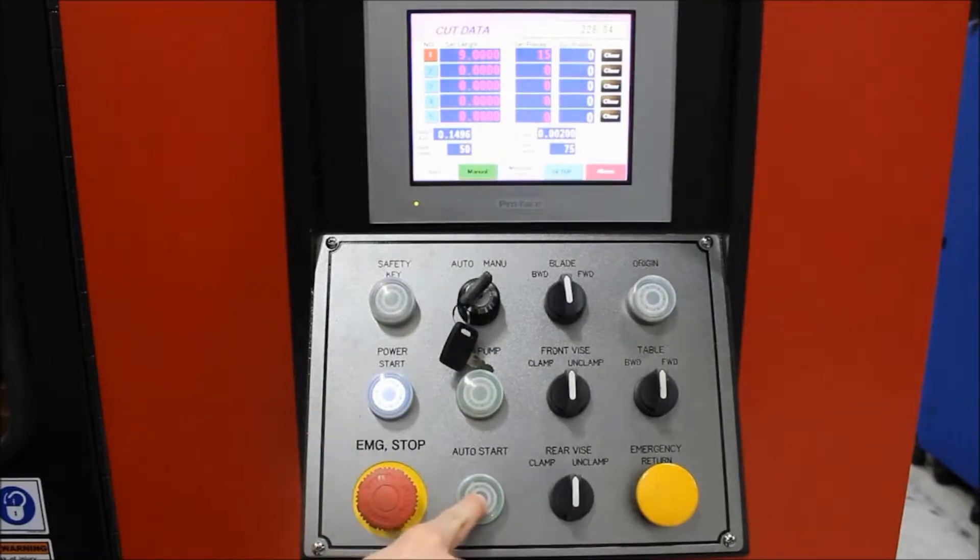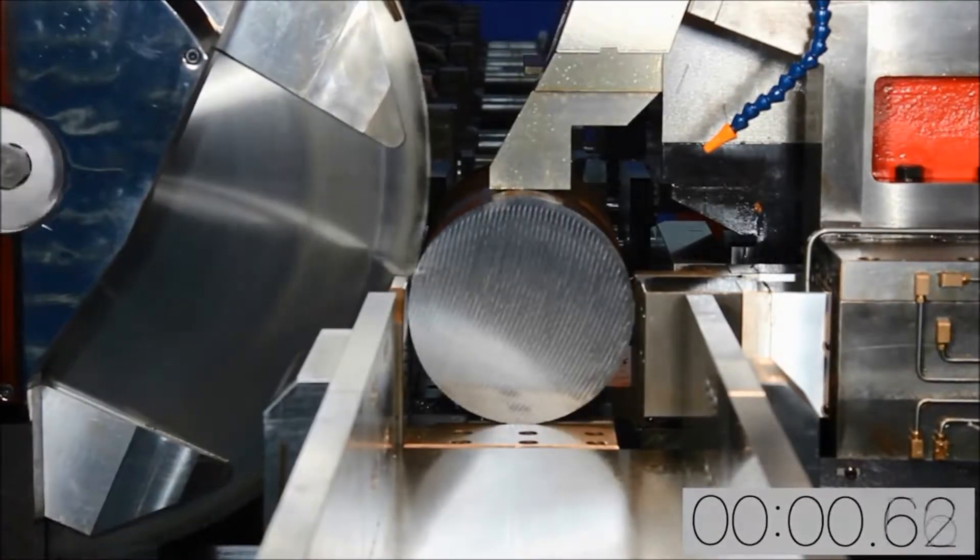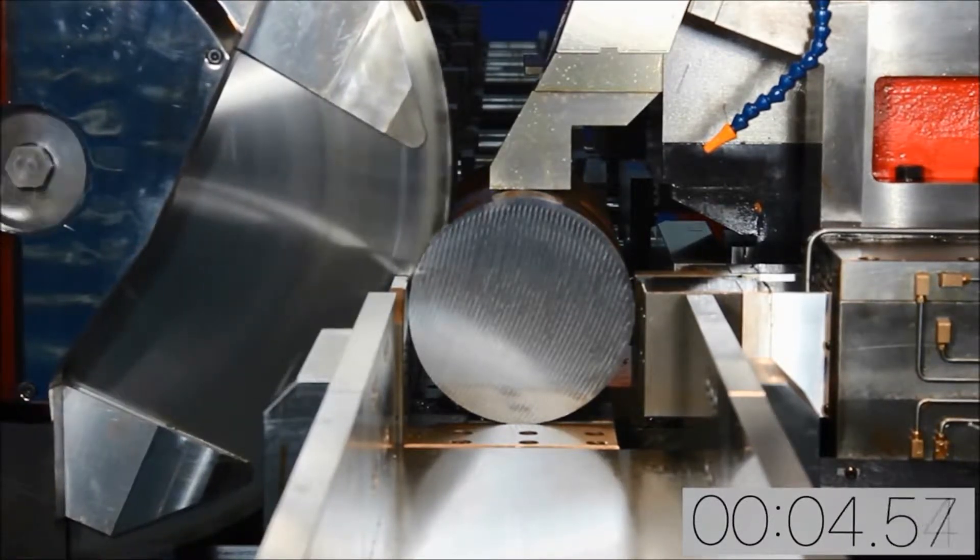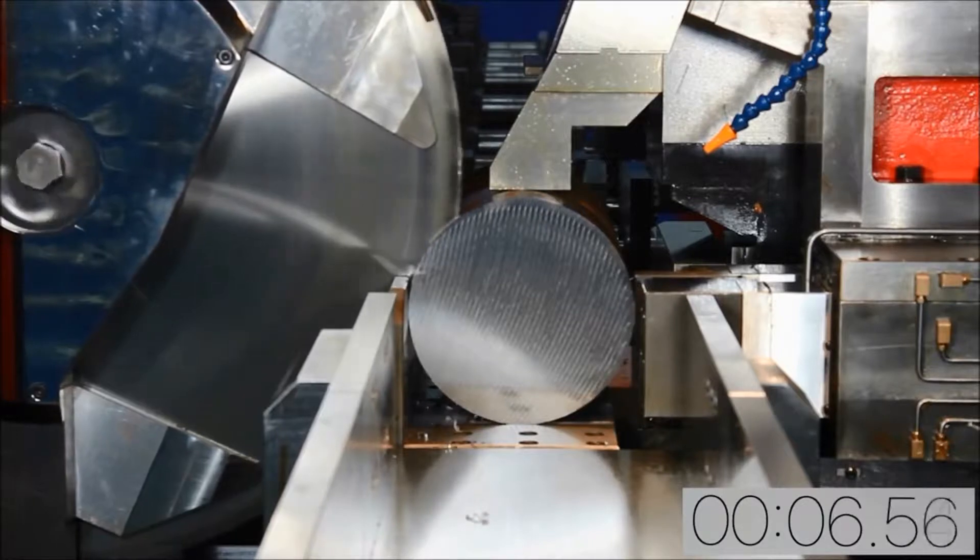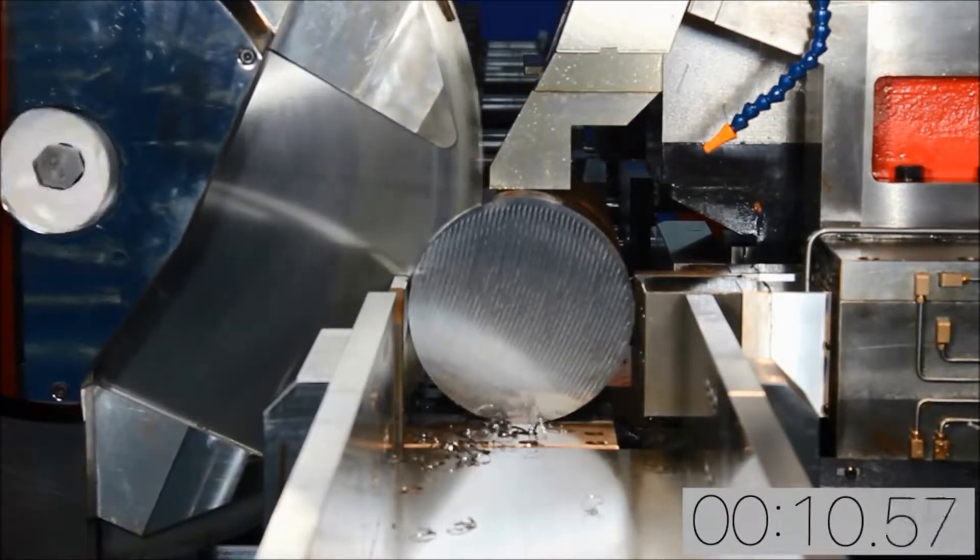A press of the cycle start button starts the production run. The large diameter blade cuts easily through this 1045 steel in about 46 seconds. The heavy-duty construction is evident by how solid the machine sounds during cutting.